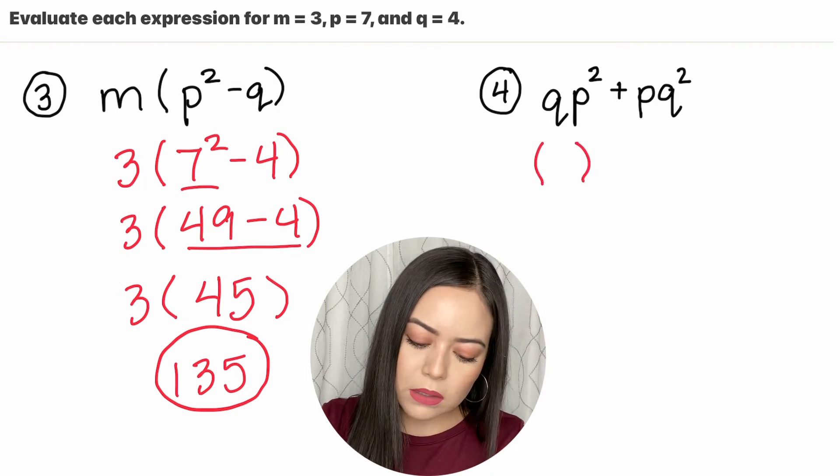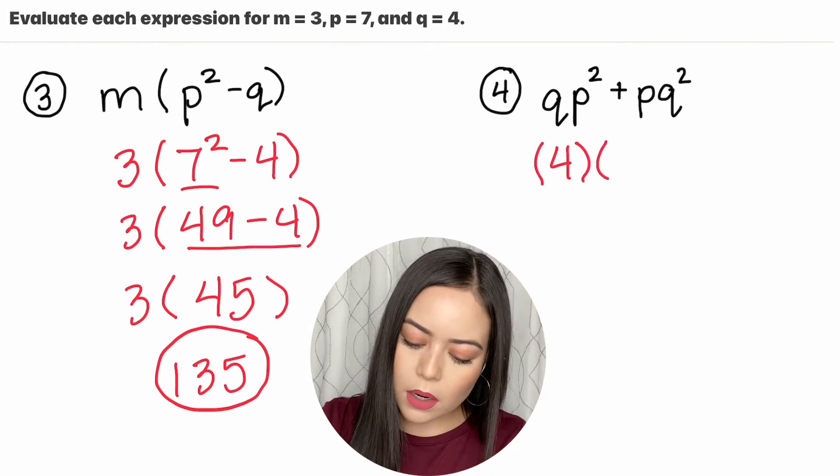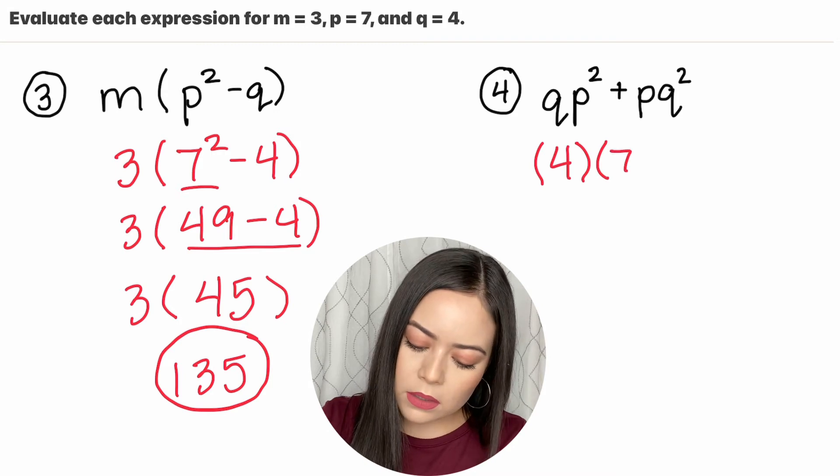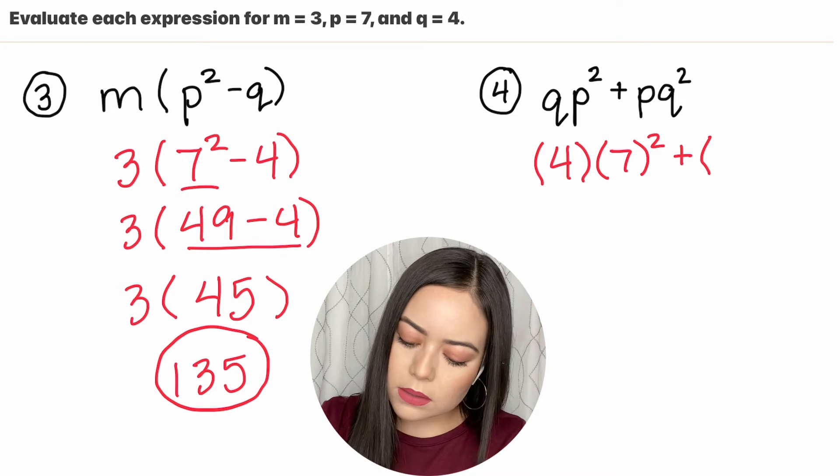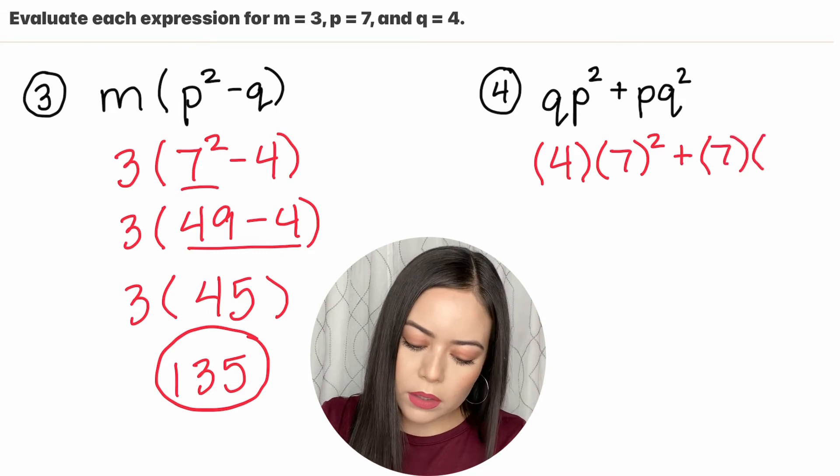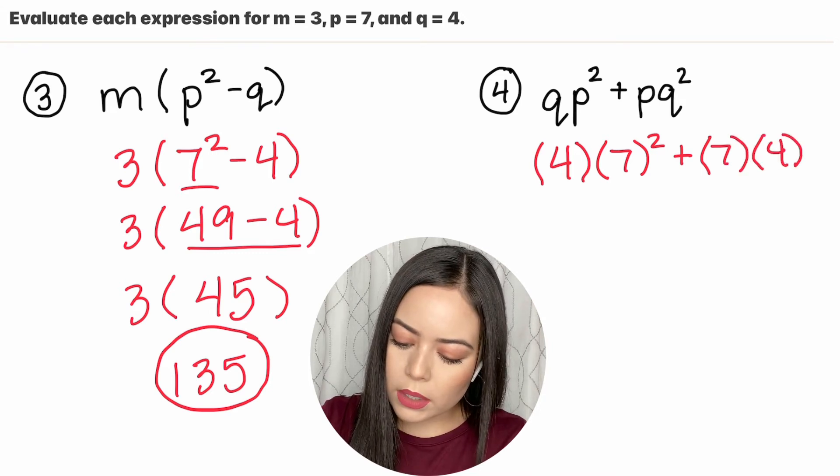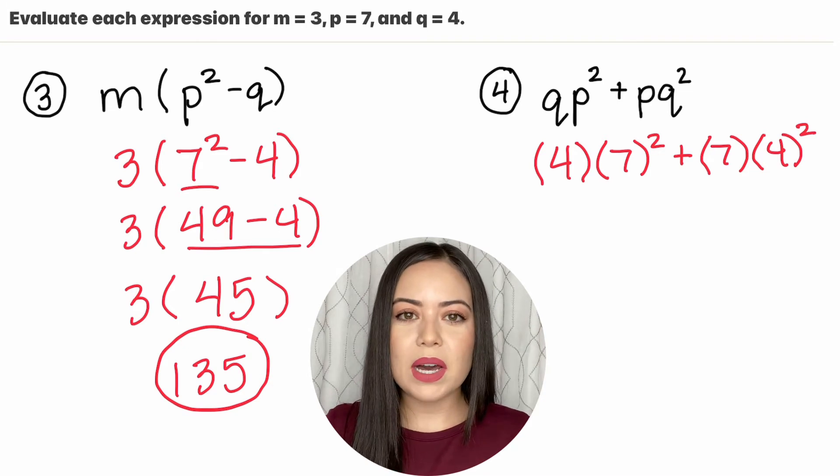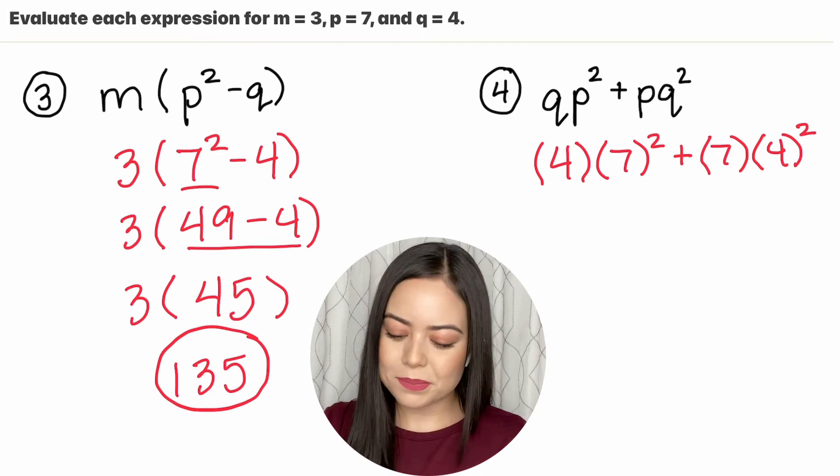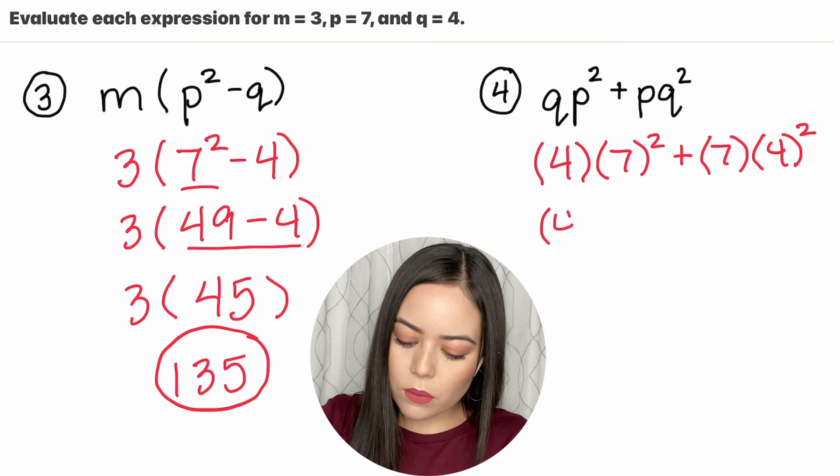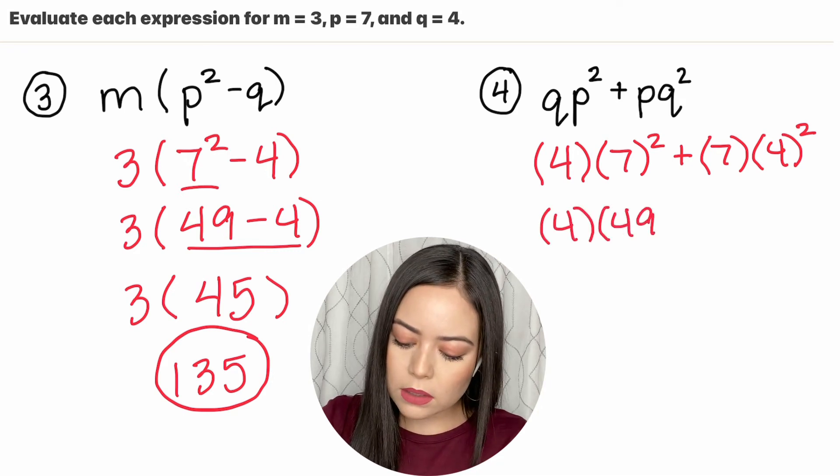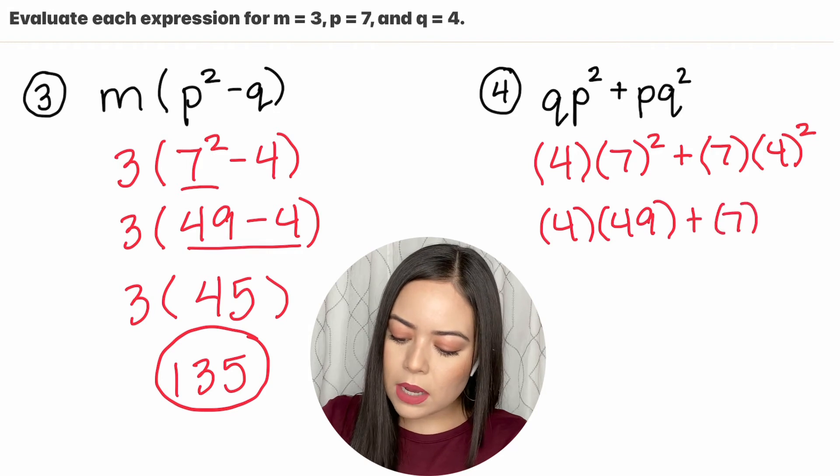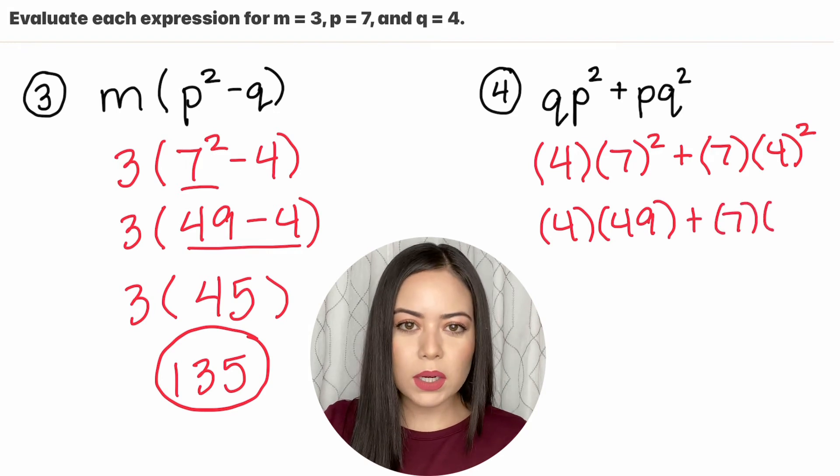So our q value is 4, our p value is 7 squared plus our p value again is 7, our q value is 4 and then squared. So again order of operations we're going to simplify the exponent first. So we have 4 times 7 squared is 7 times 7, that's 49 plus 7 times 4 squared is 4 times 4 and that is 16.